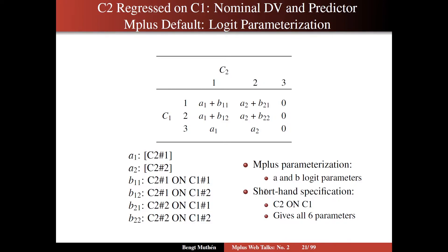The shorthand specification of this is saying C2 ON C1. That gives you all six parameters in one statement — the intercepts and the slopes — just like we do in regular regression of Y on X for a continuous Y. But sometimes it's important to be able to refer to each of the individual components like we do here.